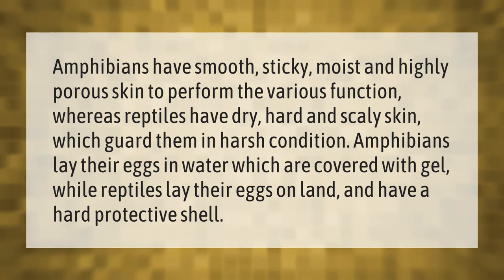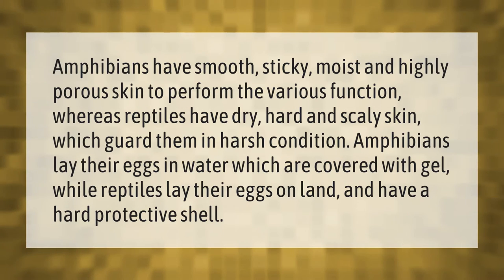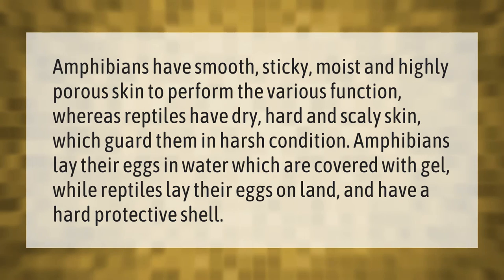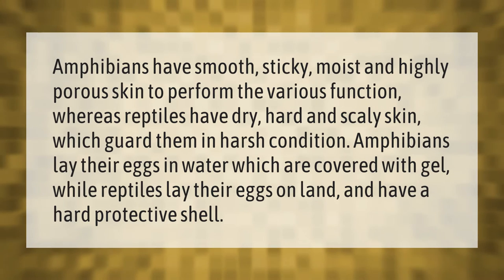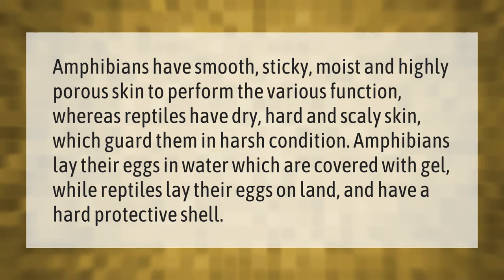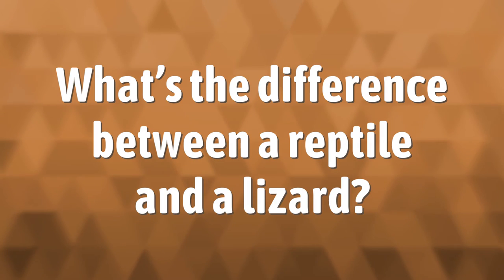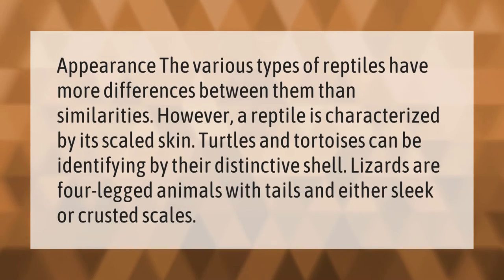Amphibians have smooth, sticky, moist, and highly porous skin to perform various functions, whereas reptiles have dry, hard, and scaly skin which guards them in harsh conditions. Amphibians lay their eggs in water, which are covered with gel, while reptiles lay their eggs on land and have a hard protective shell.